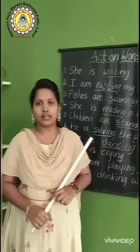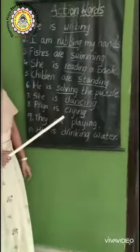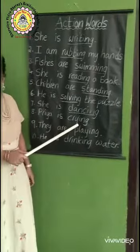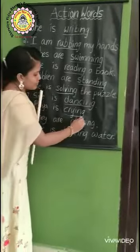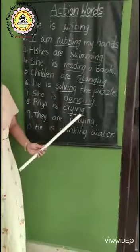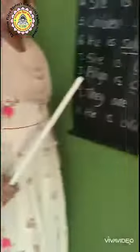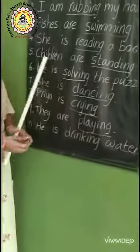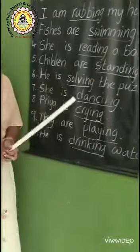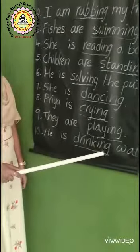Next. Okay children, coming to next example. Look at this girl — what is she doing? She is crying. What is the action word here? Crying. C-R-Y-I-N-G. Underline all of you. What are they doing? They are playing. Look at that boy — what is he doing? He is drinking water. What is the action word here? Drinking. D-R-I-N-K-I-N-G. Drinking.